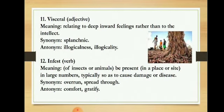Next is Visceral — used as an adjective. Our body organs are of two types: external and internal. The internal ones are called visceral organs. So visceral refers to anything that is deep inside — it can be used for feelings or for anything internal. Synonyms are splanchnic; antonyms are illogical or illogicality.